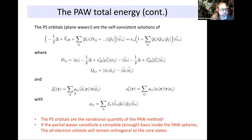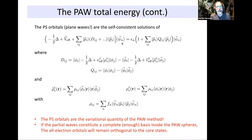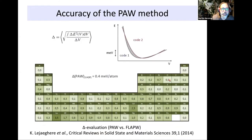These strength parameters depend on the one-center density inside the spheres, so they have to be re-computed as we compute our solutions. They vary because the one-center occupancies — computed from the projections — will vary as psi-tilde changes, since psi-tilde is our variational quantity. This graph is supposed to convince you that the PAW method is very accurate.